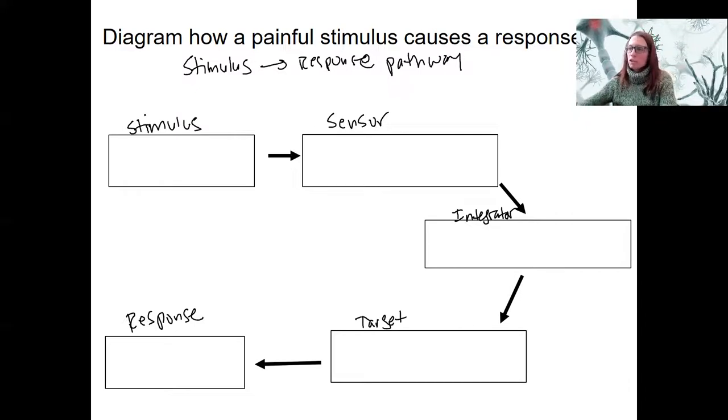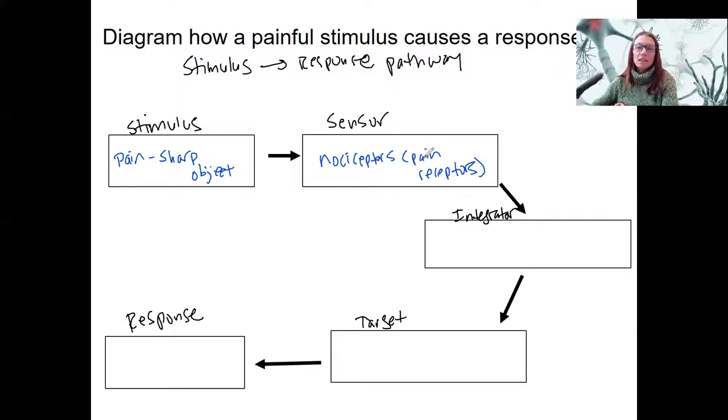For a painful stimulus, the stimulus is going to be pain. So pain could be a sharp object. Let's go with that first. Because depending on what that stimulus is, it's going to be a different specific receptor. We will talk about the sensory system specifically, but I'm going to use a specific here now. Nociceptors are the names for pain receptors. Let's say this is actually located in the skin that you poke someone's finger with a pin.